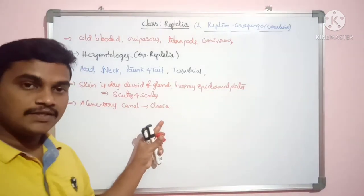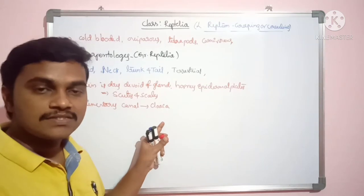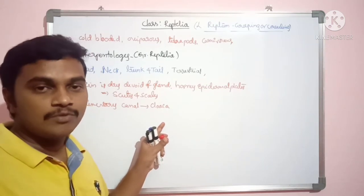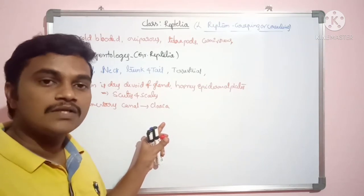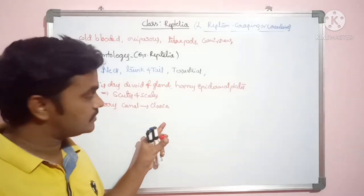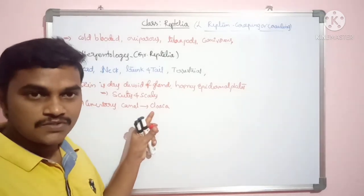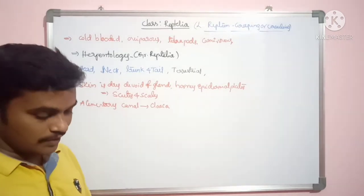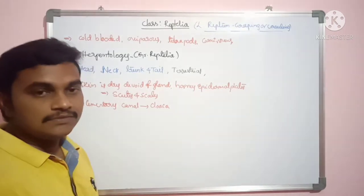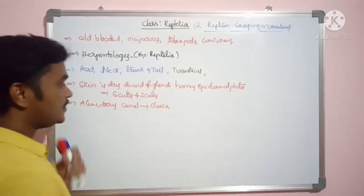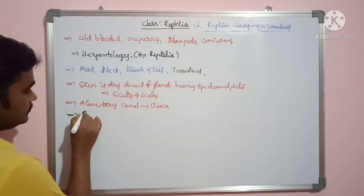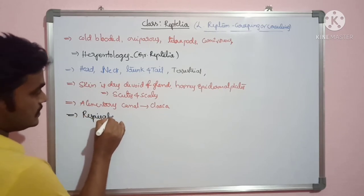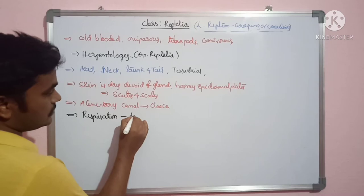The cloaca contains three common openings: the alimentary opening, the urinary opening, and the reproductive opening. This particular part is called the cloaca. The alimentary canal opens into the cloacal fissure. Respiration is carried out by lungs.